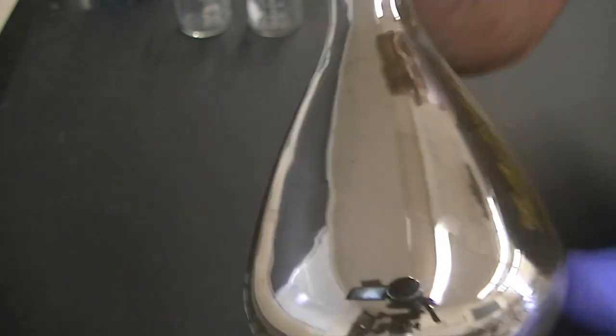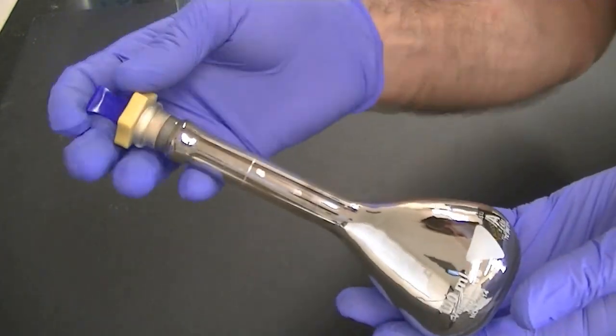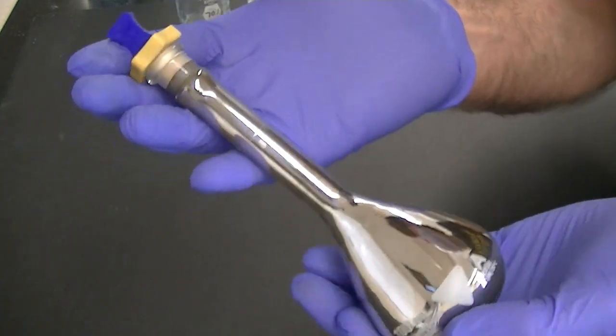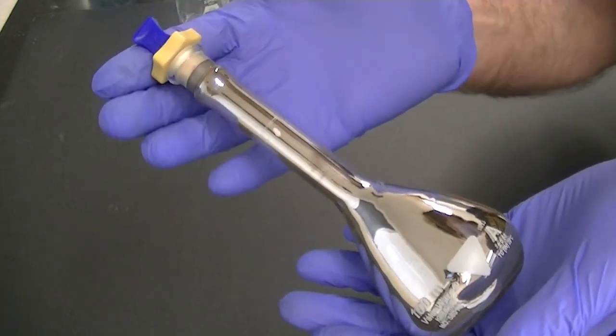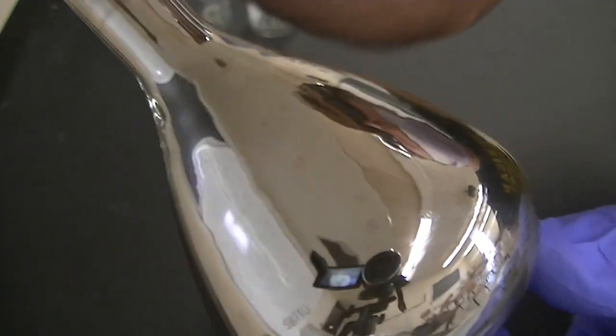I'm glad that none of the other ingredients in the Powerade inhibited the formation of the mirror. I wonder if this would work with orange juice. Do you have ideas for other sugar juices to try to form a silver mirror? If you do, please leave your suggestions in the comments. And thanks so much for watching!